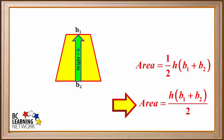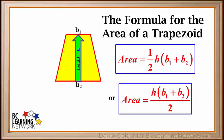This can also be written as area equals H times (B1 plus B2) all over 2. So the formula for the area of a trapezoid can be written in either of these two ways. They give exactly the same answer.